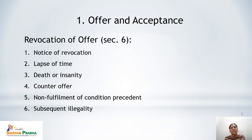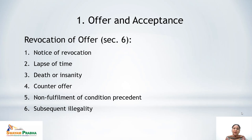Fifth, non-fulfillment of a condition precedent. If the offer is conditional — for example, 'I will purchase your house if it is repaired' — and the condition of repair is not fulfilled, the offer is revoked. Sixth, subsequent illegality: any condition which makes the subject matter illegal subsequently will revoke the original offer.